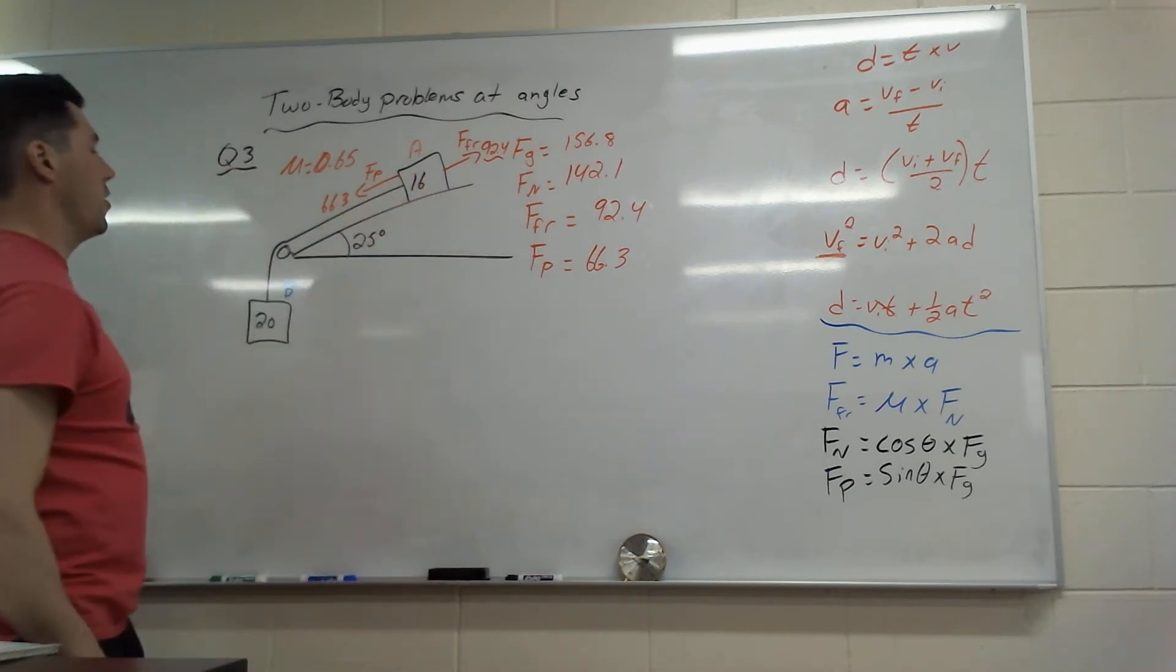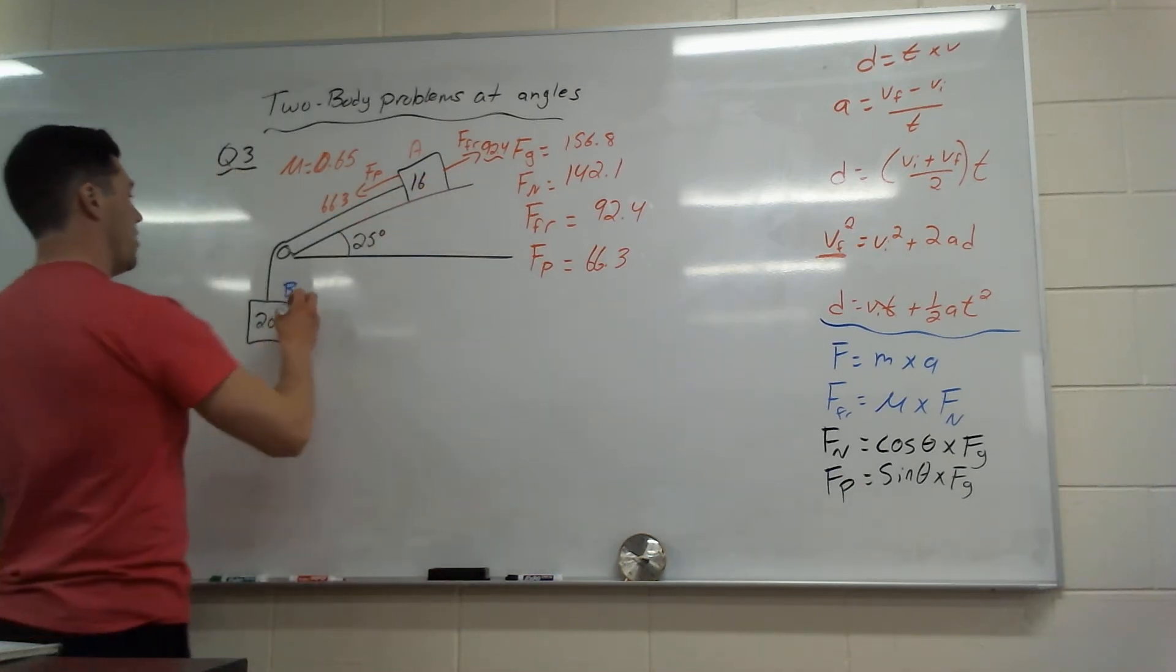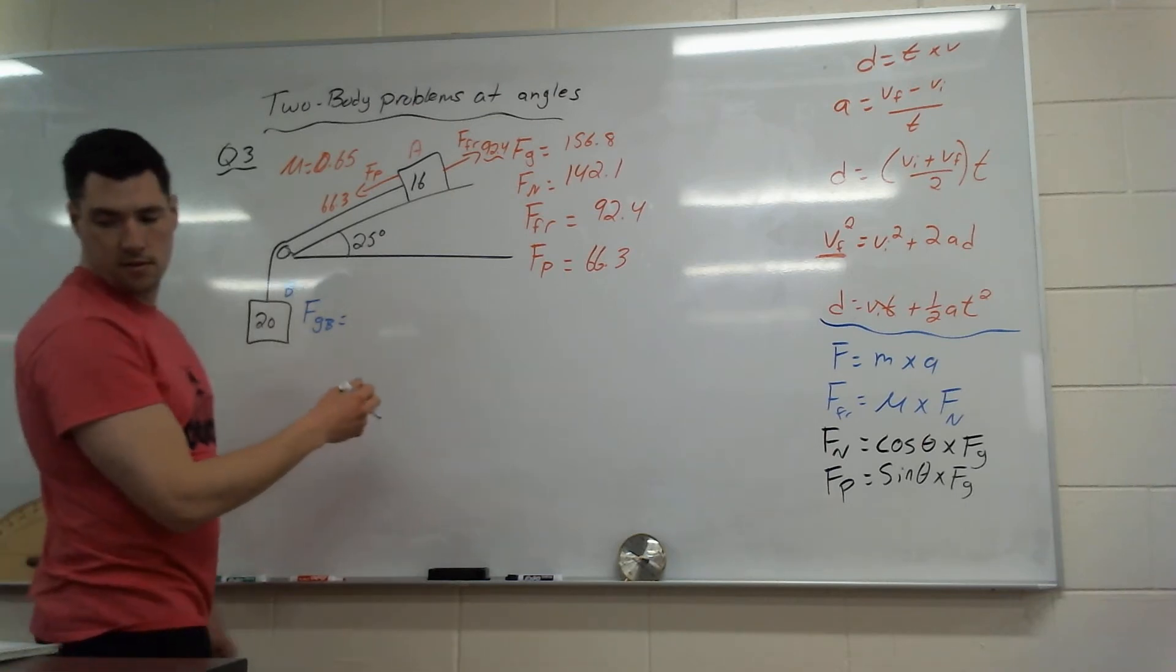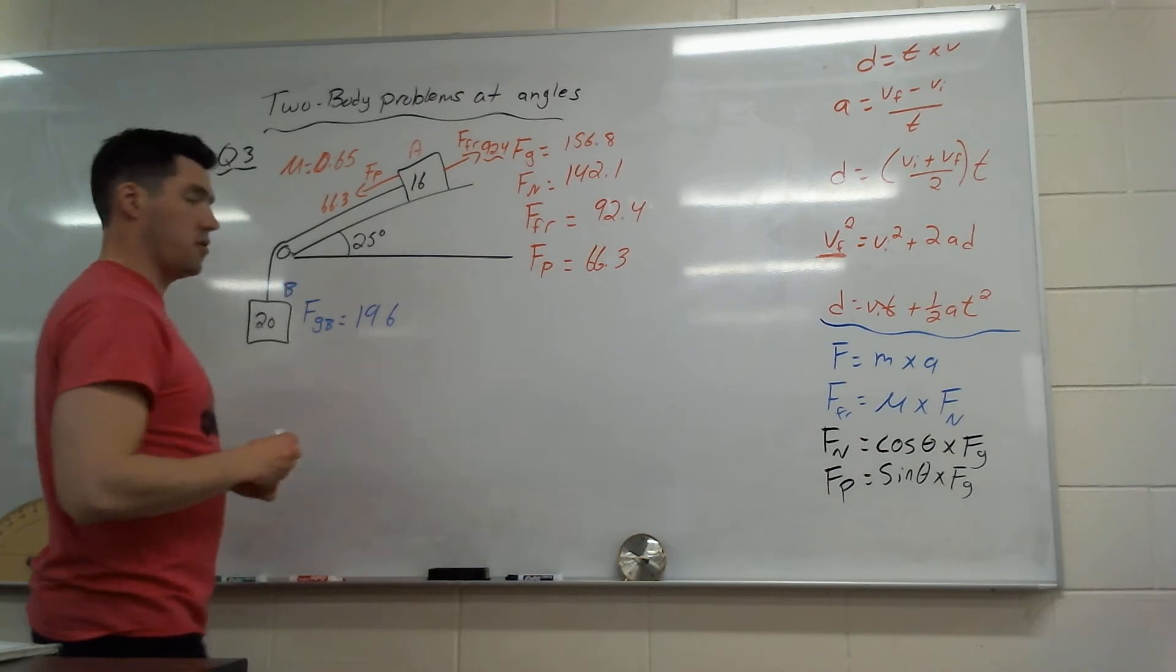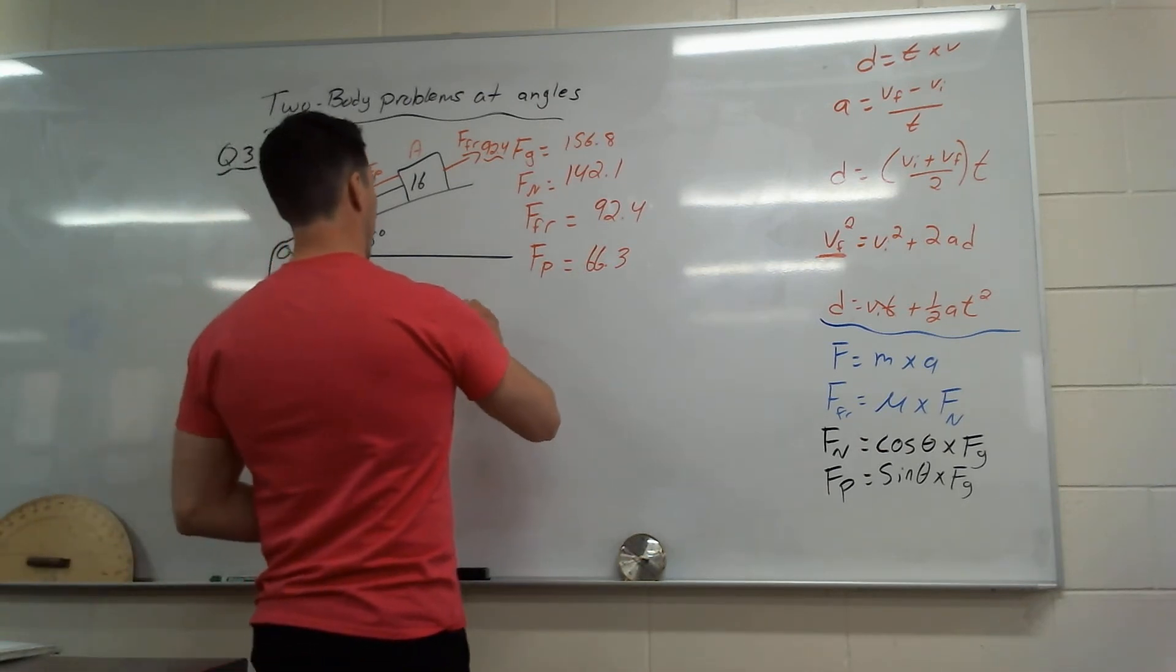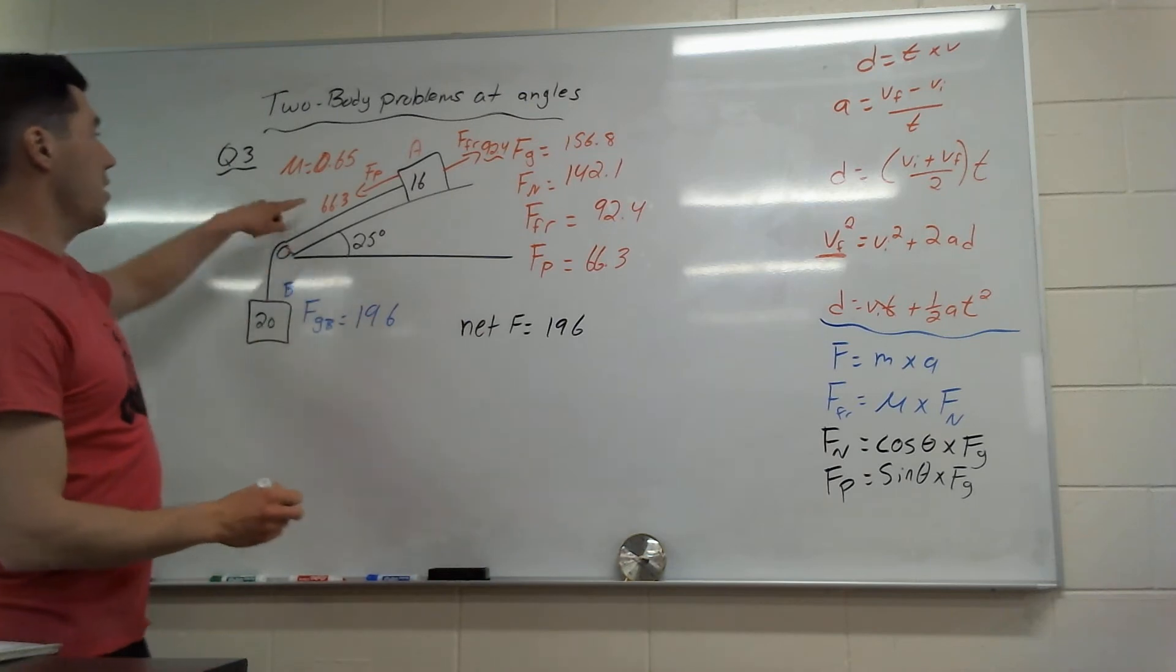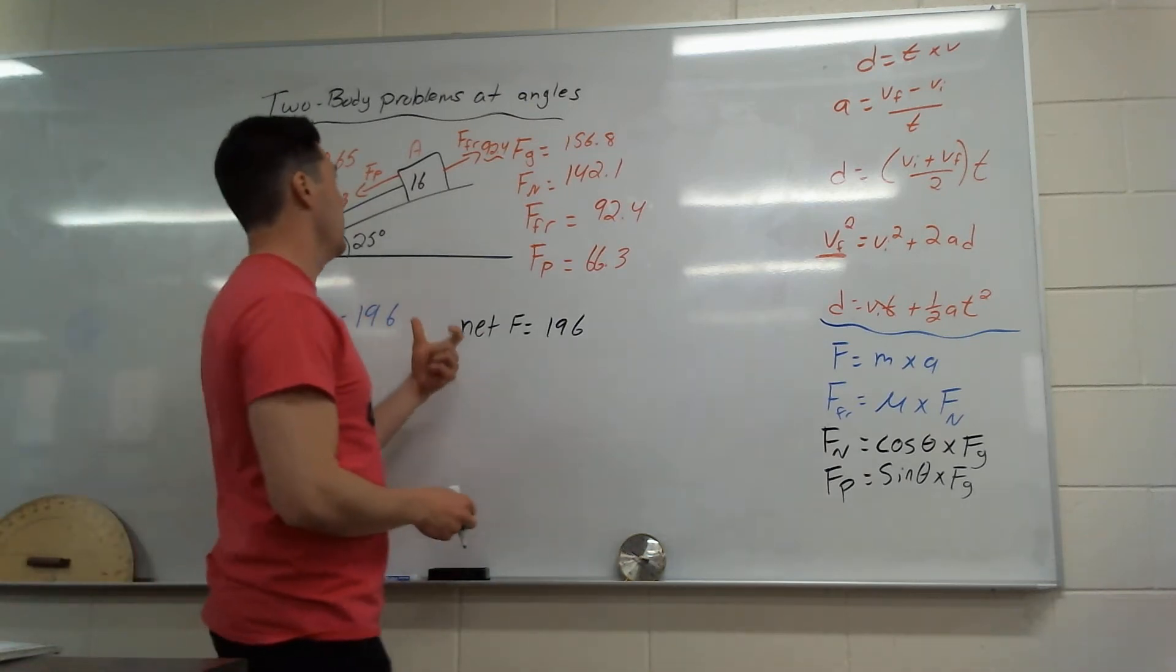So there's that broken into the two parts. Let's find this one, which is way easier, because all I have is force gravity of B, 20 times 9.8, so 196. Let's go and find our net force. Net force equals 196, it's pulling it down. Plus, it's going to plus this one, because it's also going in the same direction. So plus that force parallel, because that's helping. So plus 66.3.